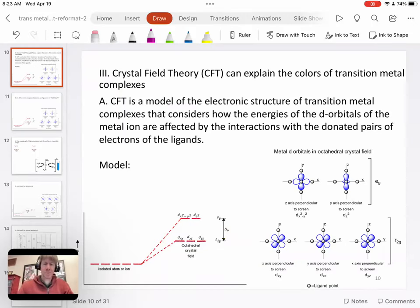All right, we're finally ready to introduce crystal field theory and how it can explain the colors of transition metal complexes. So crystal field theory is a model of the electronic structure of transition metal complexes. It considers how the energies of the d orbitals of the metal ion are affected by the interactions with the donated pair of electrons of the ligands.